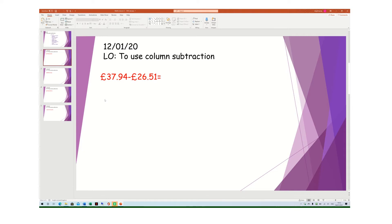When we're looking at column subtraction, the first thing we do is write the biggest number first. So in this case the biggest number is £37.94. So I write it down, £37, decimal place will always stay in the same place, 94. My other number is £26.51. So if I'm using subtraction I'm definitely taking away.